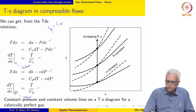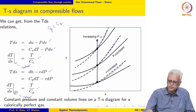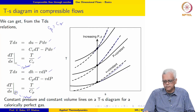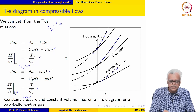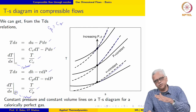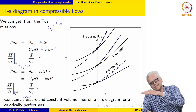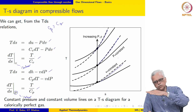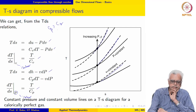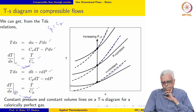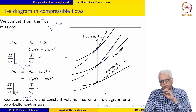The slopes of both isocores and isobars are positive and increase with temperature — as temperature increases they become steeper, and as temperature decreases they become shallower. Most importantly, isocores are steeper than isobars. In a PV diagram, both isentropes and isotherms have a negative slope. The magnitude of the slope of isentropes is greater than that of isotherms — S equals constant lines are steeper than T equals constant lines.